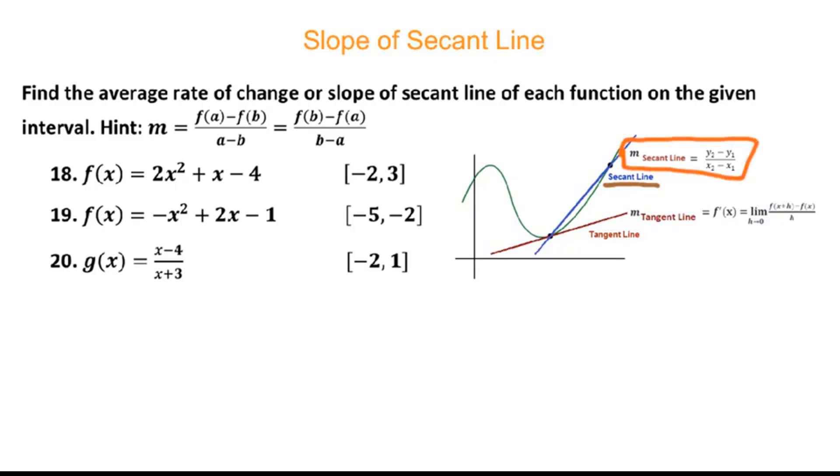Now look back on this problem. Find the average rate of change - that means slope of a secant line of each function on the given interval. First of all, we know this will be x1 and this is x2.